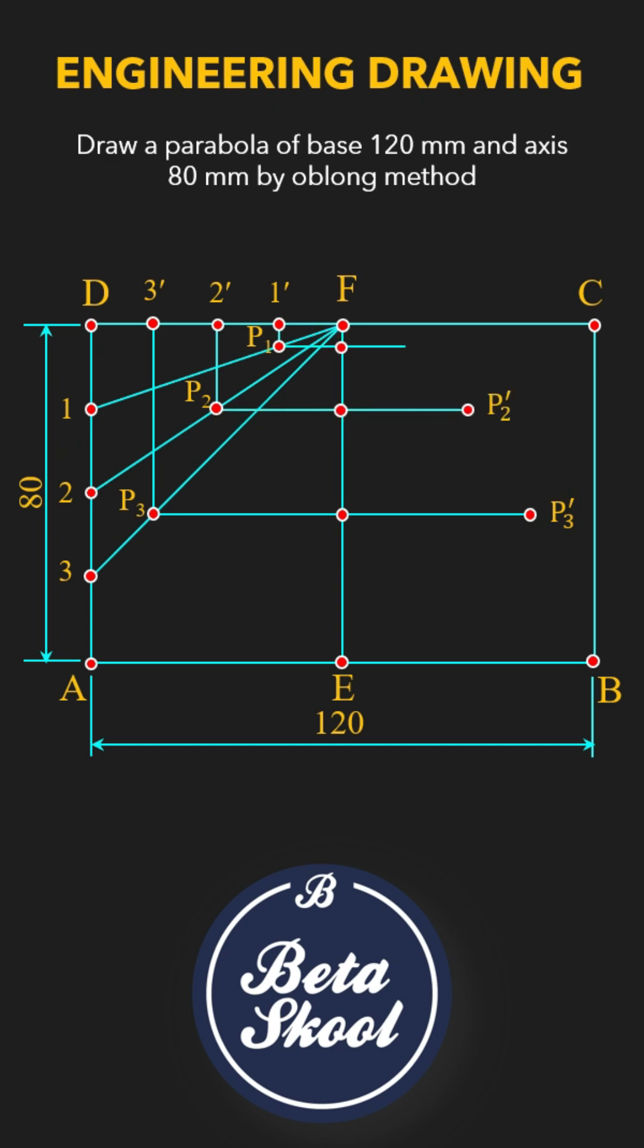Finally, draw a smooth curve passing through points A, P3, P2, P1, F, P1', P2', P3', and B. This smooth curve is your required parabola. And that's it.